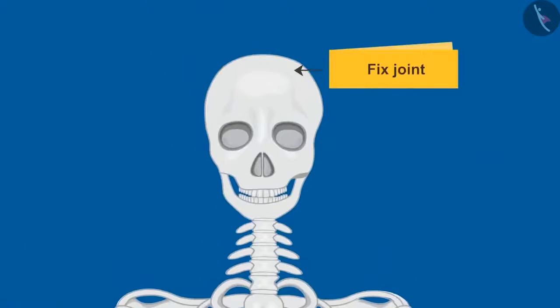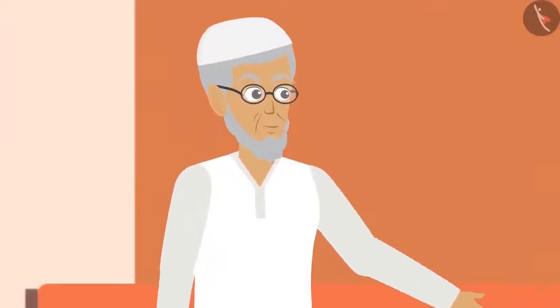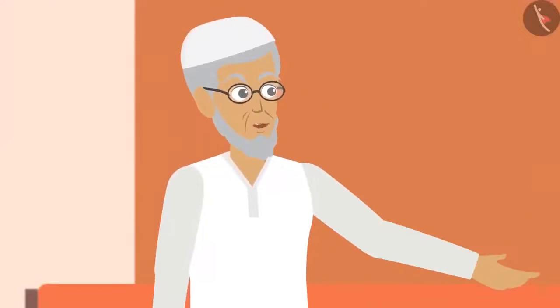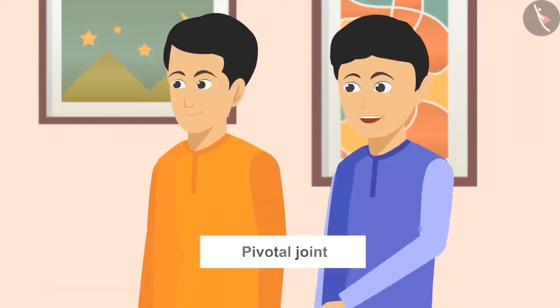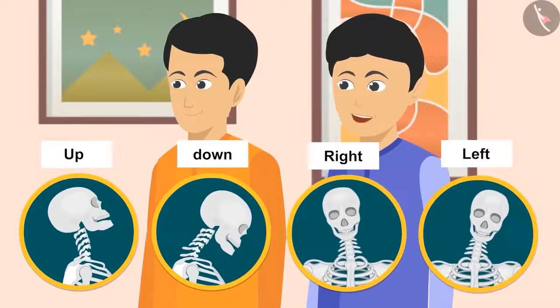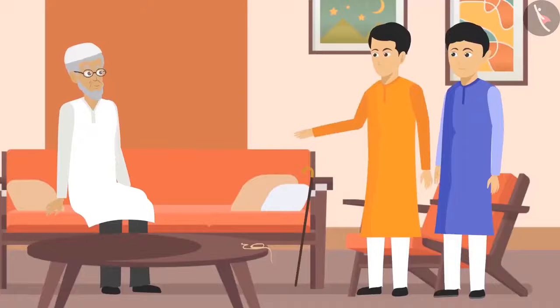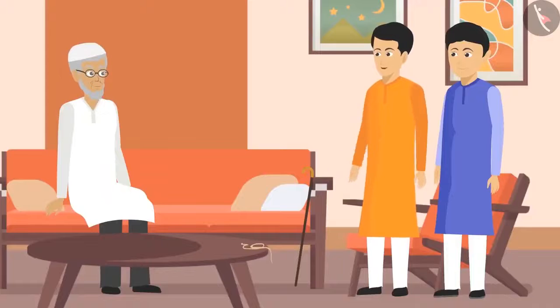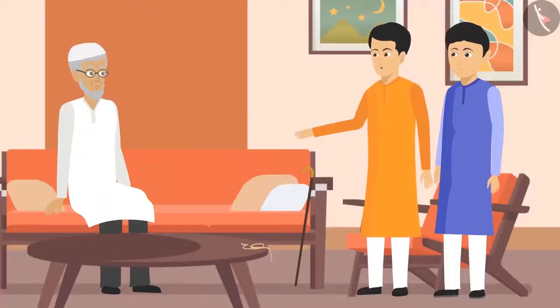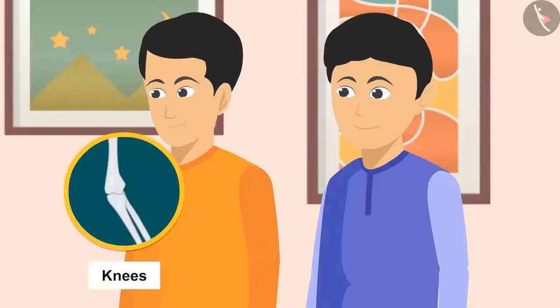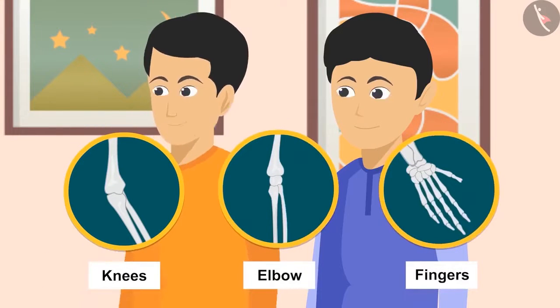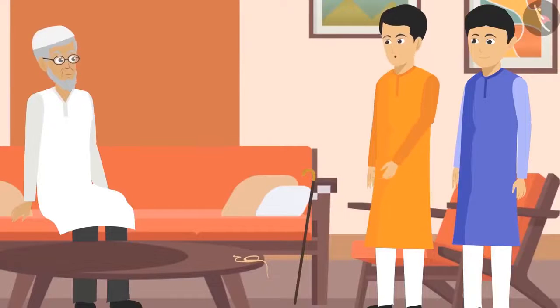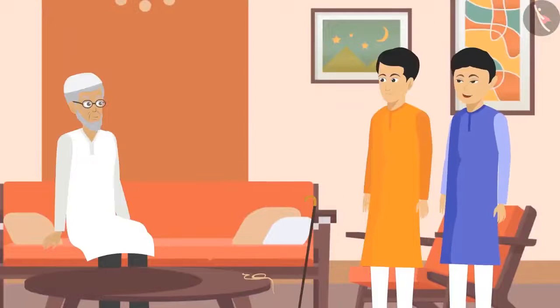The students explained the function of each joint. The pivotal joint allows us to rotate our neck left, right, up, and down. Hinge joints work exactly like the opening and closing of doors and are found in the knees, elbows, and fingers. With hinge joints, body parts can move in only one direction.